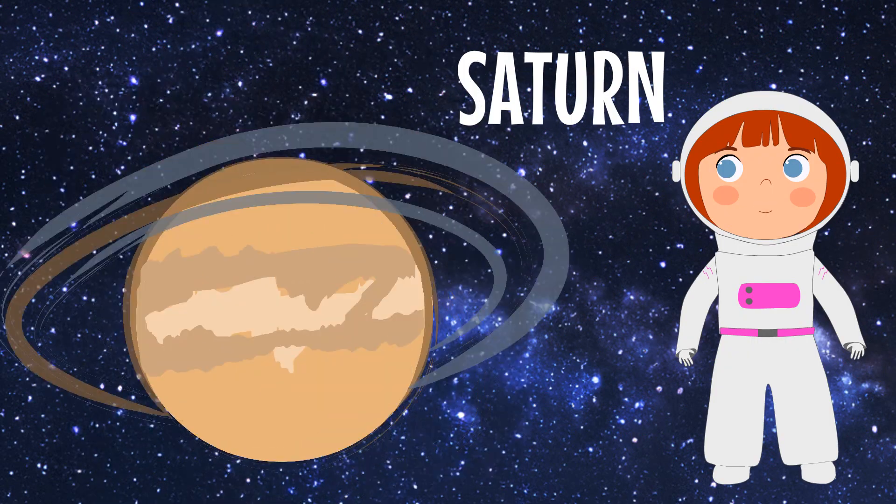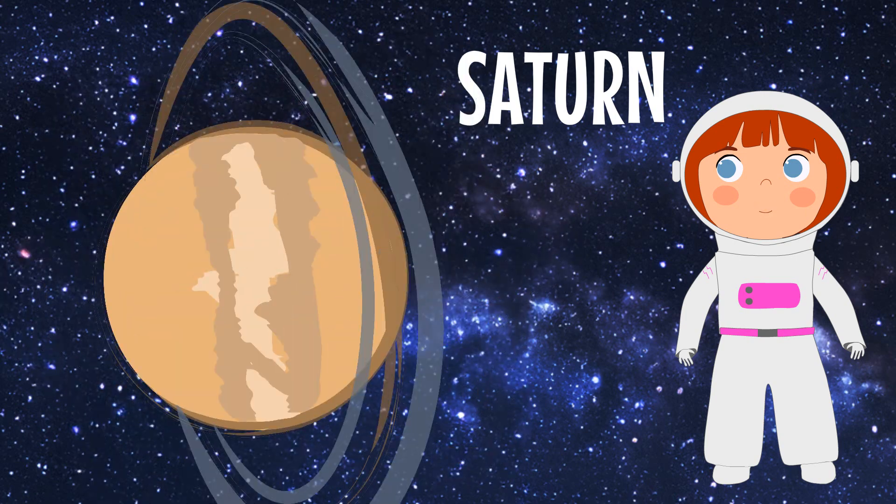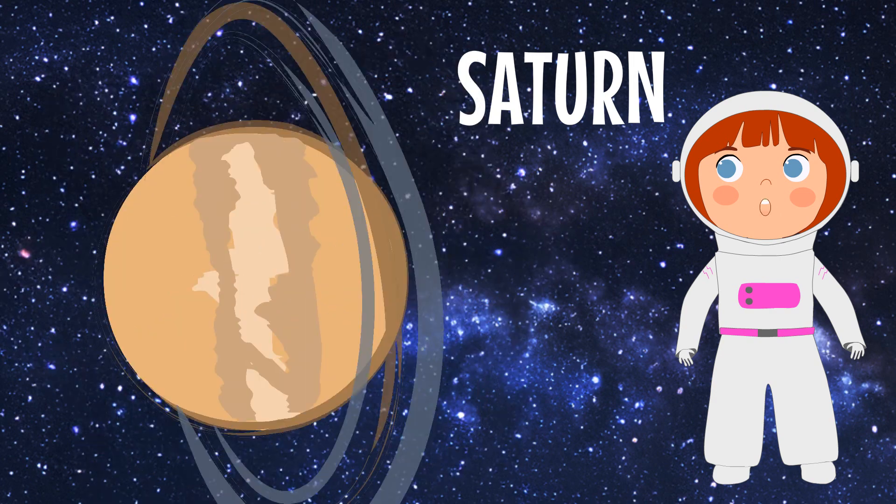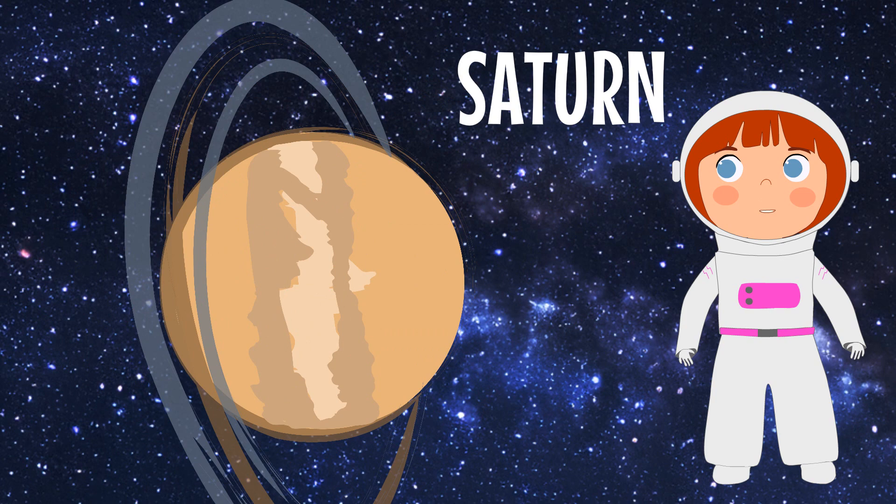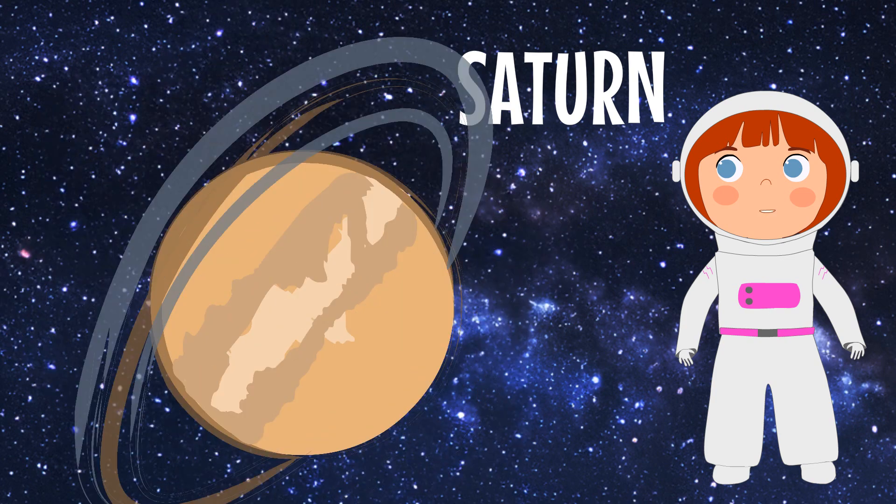Hello Saturn. Saturn has beautiful rings made of dust and ice around it. Doesn't Saturn's rings resemble a hula hoop? But Saturn is very cold too. Goodbye big cold and hula hoop Saturn. Let's go.